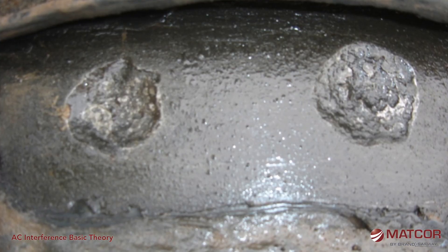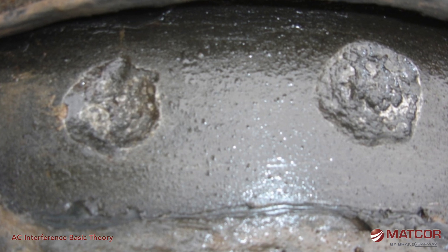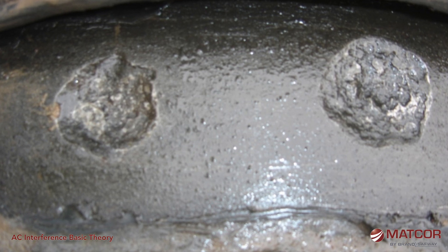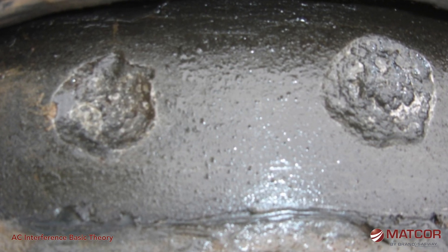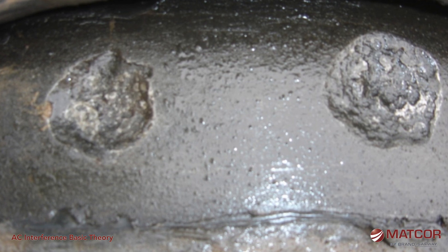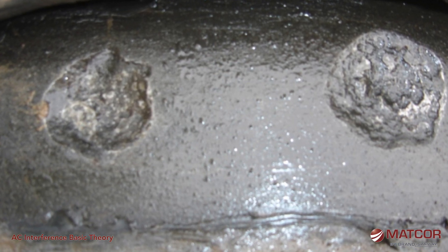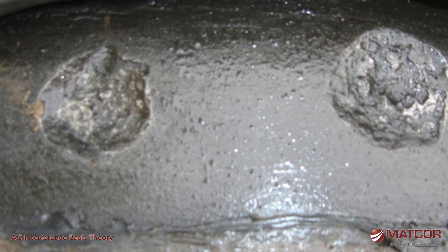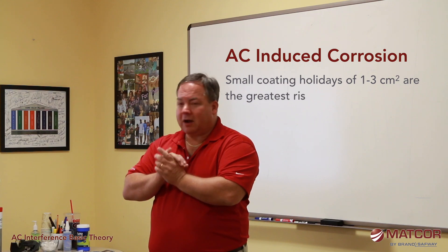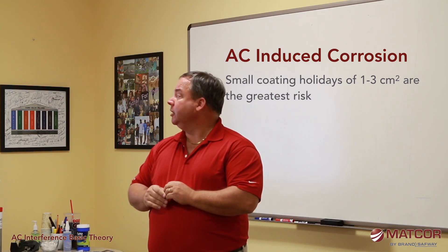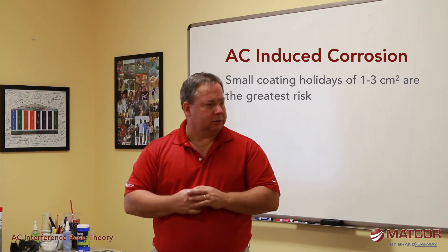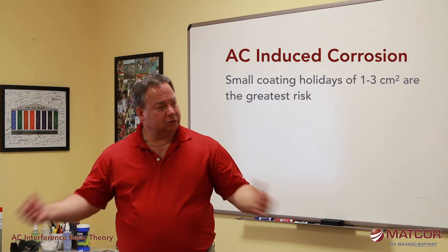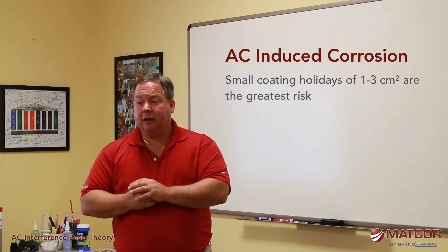This is what AC induced corrosion looks like — it can be round craters, sometimes very deep, and may even look like microbiologically induced corrosion because they have similar characteristics. It occurs in the presence of AC transmission lines, sometimes distribution lines, and typically in a low soil resistivity environment. Testing has found that the optimum coating holiday size for high AC corrosion is between one and three centimeters squared.